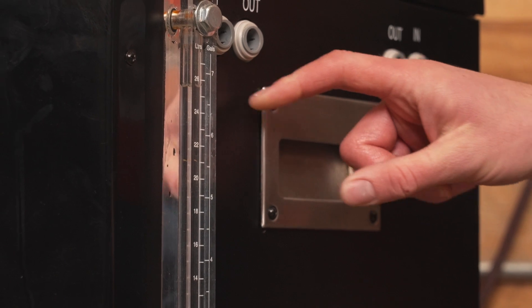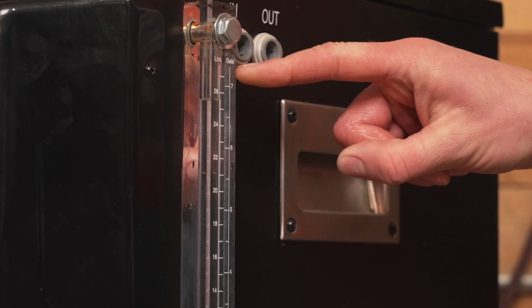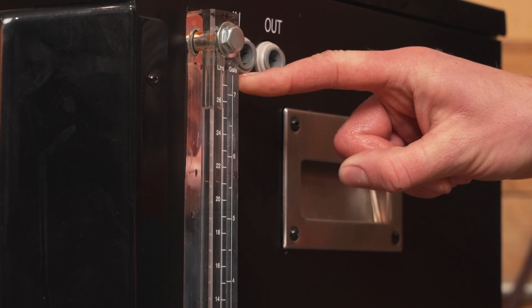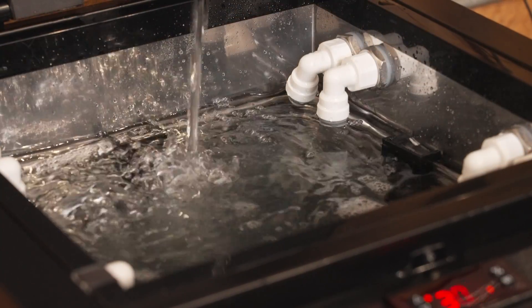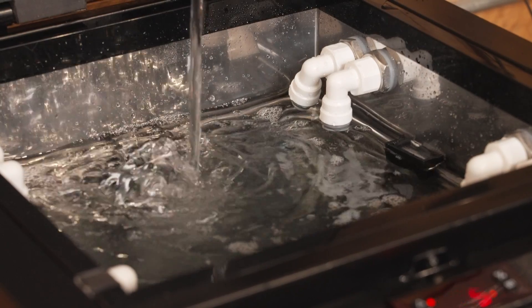Use the sight glass to monitor the glycol level. You may notice a slight decrease over time. If the level in the chiller drops below the optimal level, add more glycol to bring the reservoir up to the minimum of six gallons.